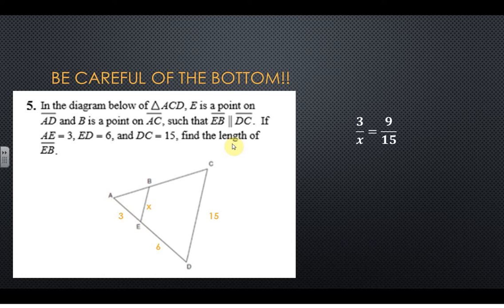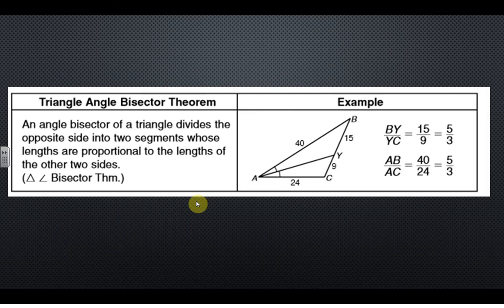So I need to do the whole side to the bottom. So it'd be 3 over x, and 9, this whole thing, over 15. This is a big mistake that people make, so I'm trying to make a big deal when I point it out.